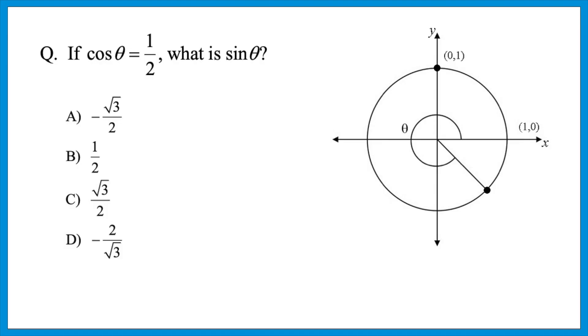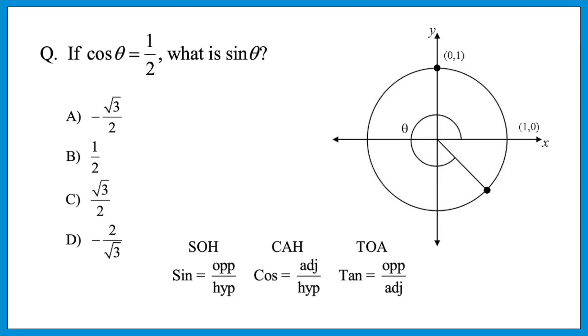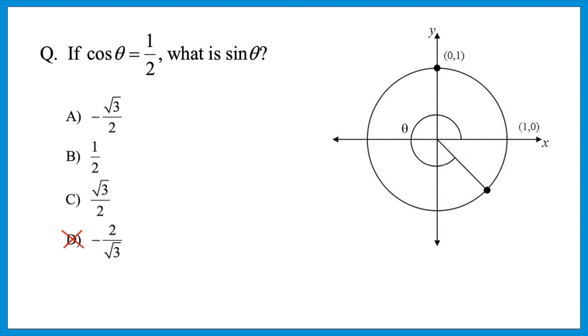If the cosine of theta is one half, what is the sine of theta? There is a very complicated math approach using reference triangles — but that involves serious trigonometry many students have never learned. So let's sidestep that. Remember SOHCAHTOA. They tell us cosine of the angle is 1/2 — that means adjacent over hypotenuse equals 1/2, so the hypotenuse has to be 2. The question asks for the sine, which is opposite over hypotenuse. We know the hypotenuse must be 2, which alone tells us we can knock out D. Now we're down to A, B, and C.